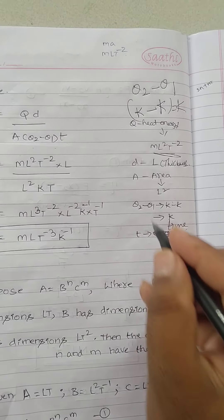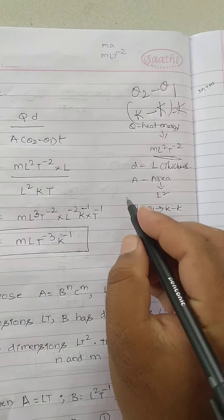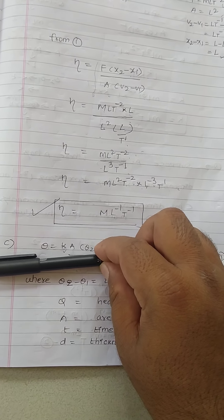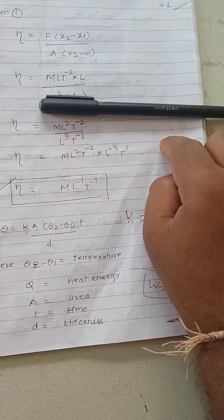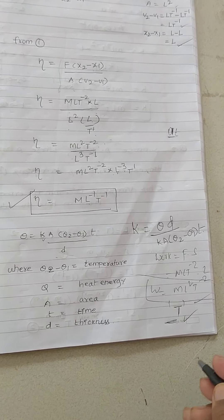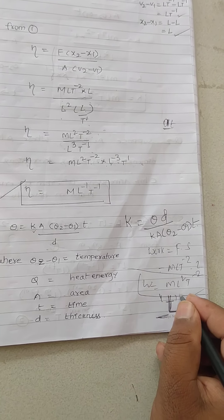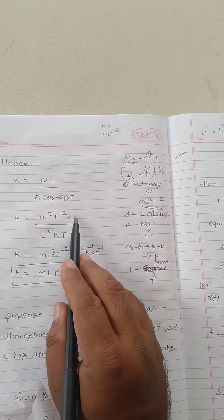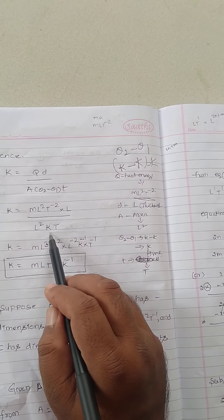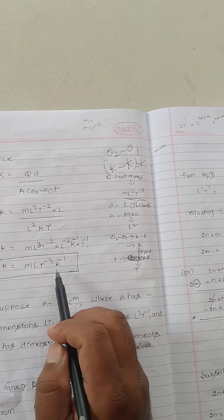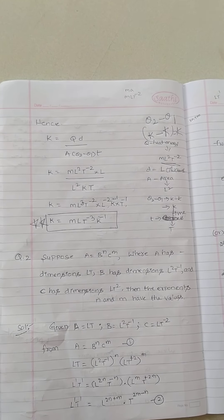Thickness is just L. So substituting into K = ML²T⁻² × L / (L² × K × T): numerator = ML³T⁻², denominator = L² × K × T = L²KT. This gives K = ML³T⁻² / L²KT = MLT⁻³K⁻¹. Therefore the dimensional formula for the thermal conductivity constant K is MLT⁻³K⁻¹.